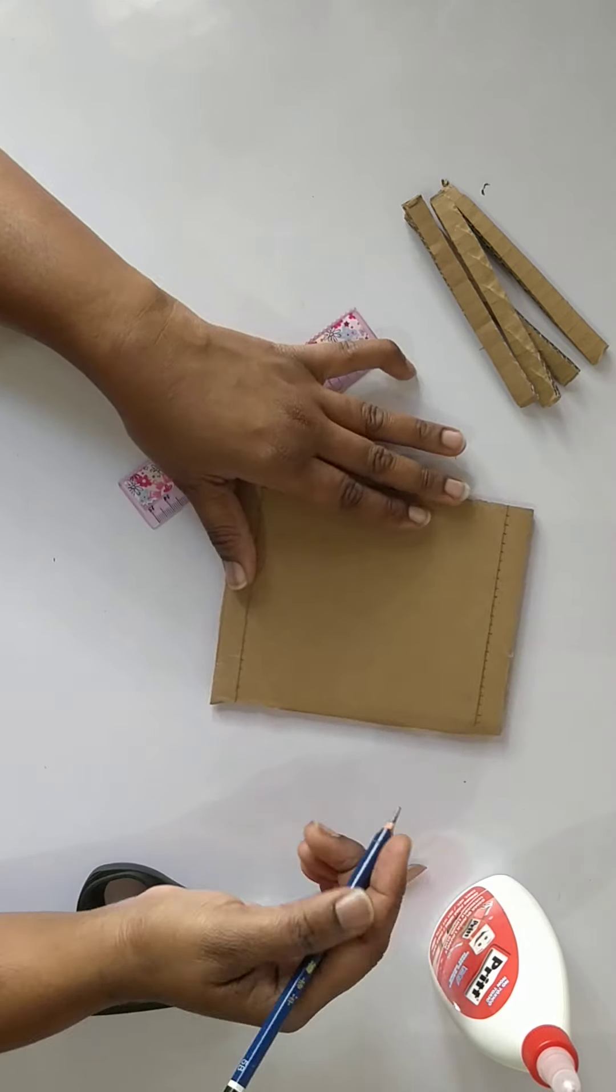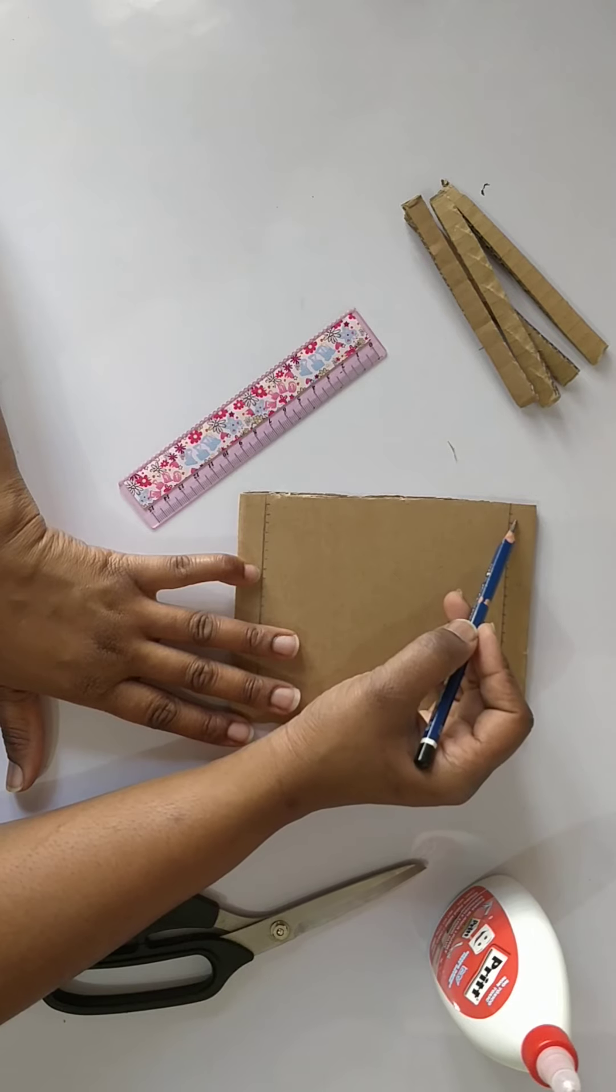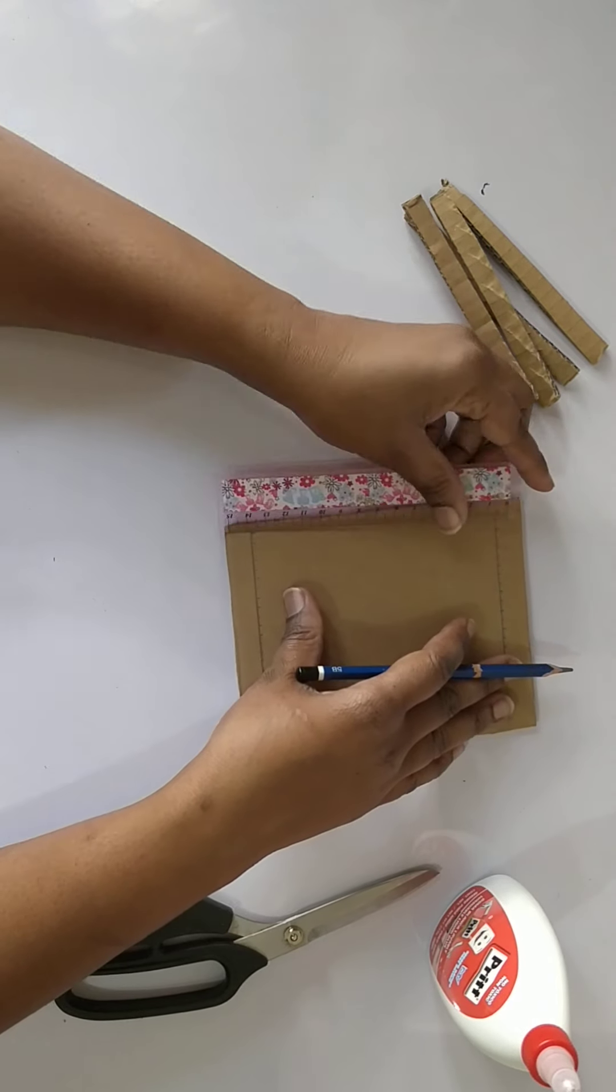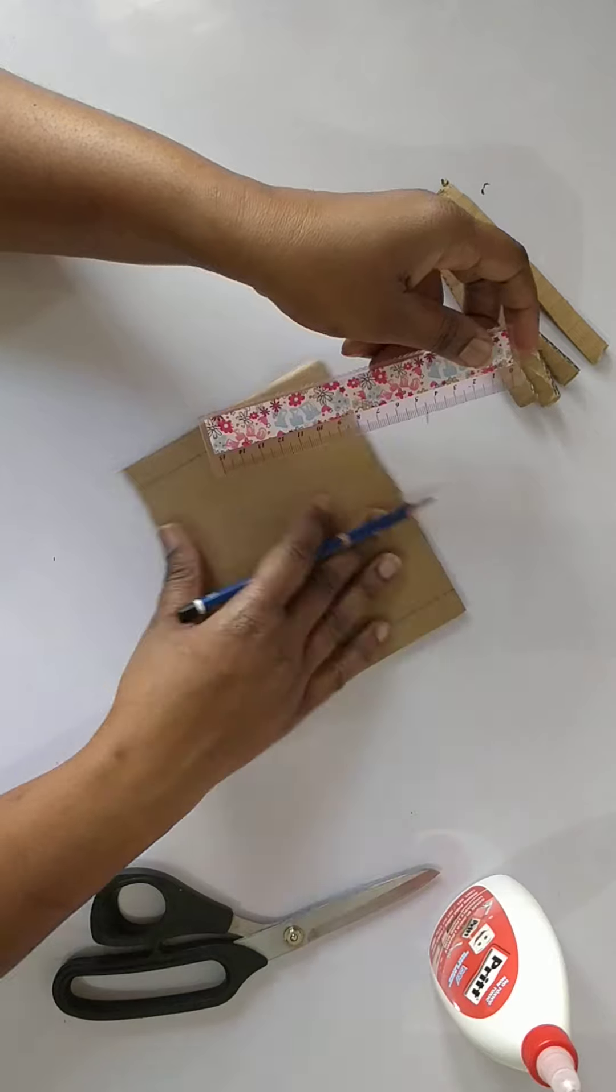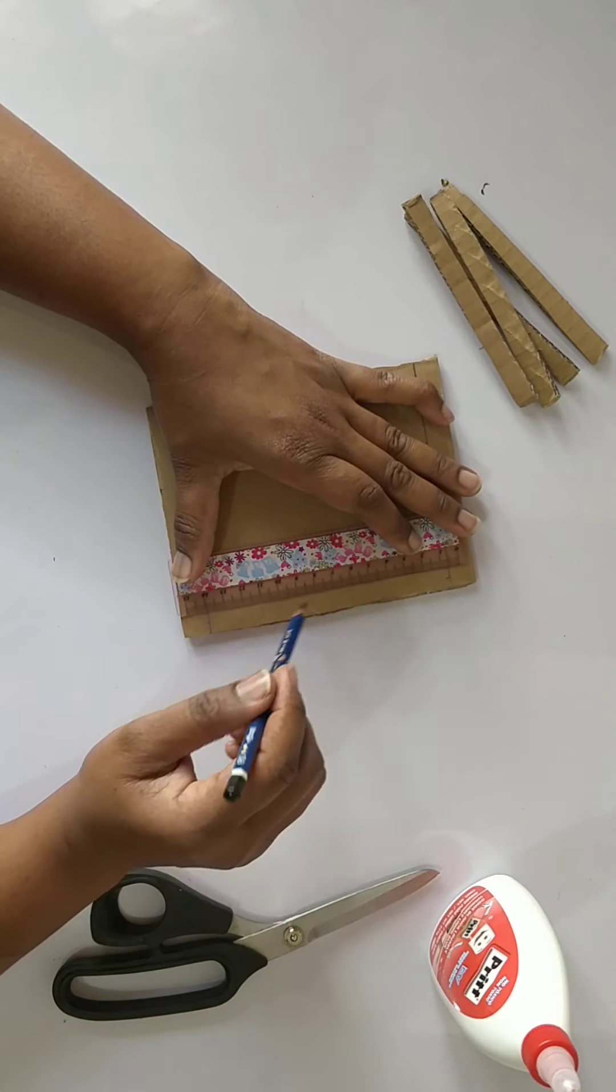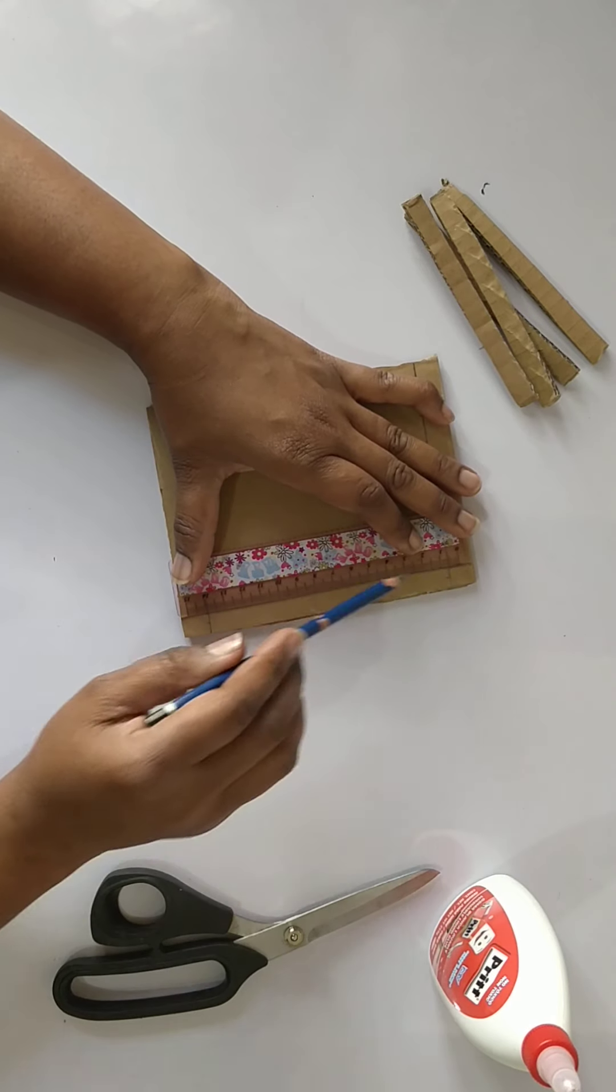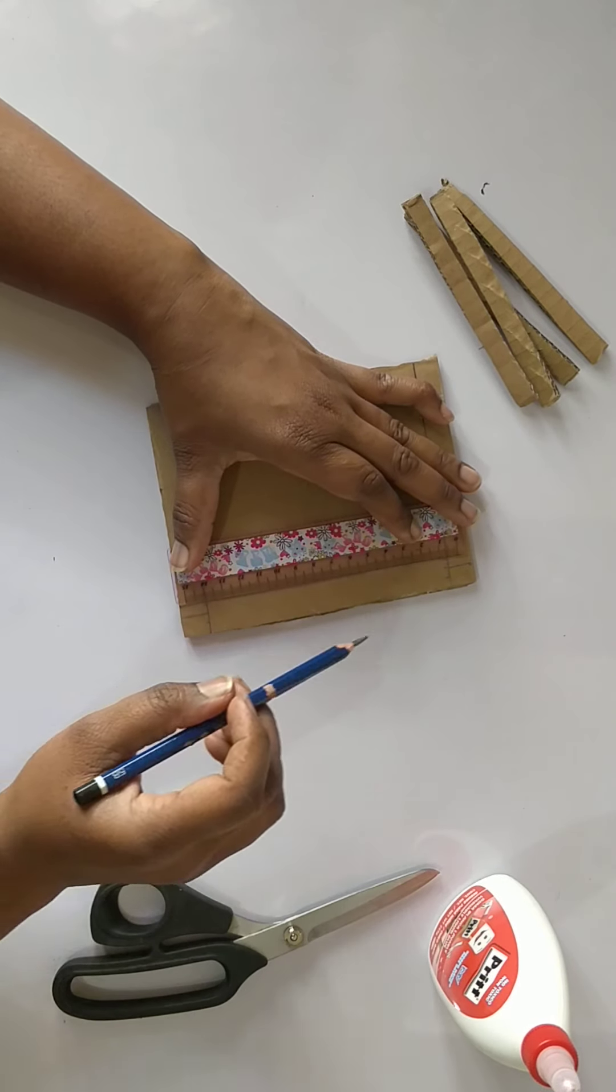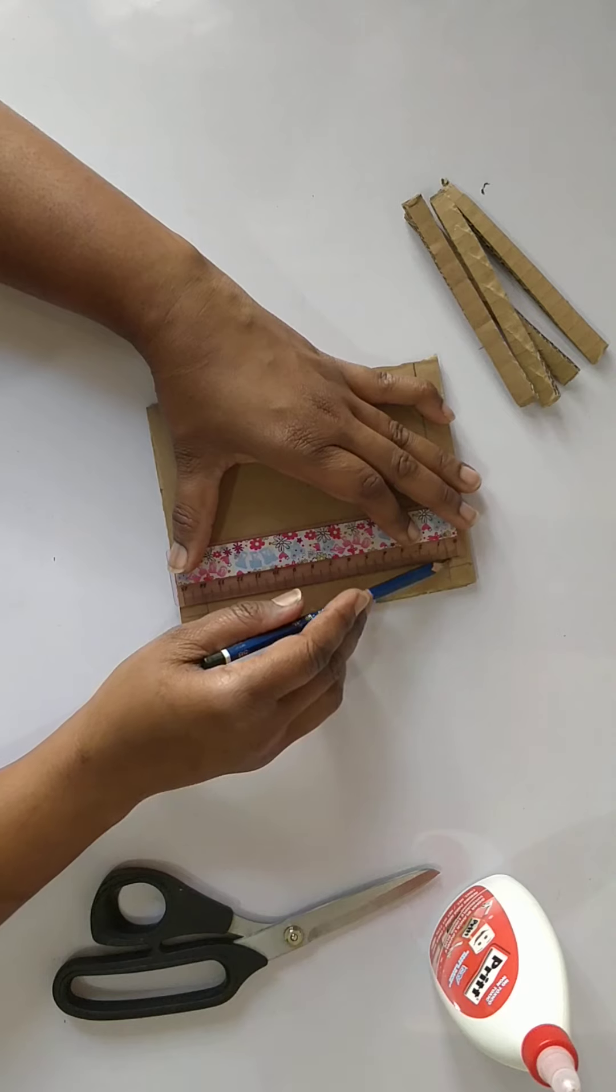What we're going to do is take our ruler and connect the lines. I'm going to skip the first line and go to the second line and continue like that.